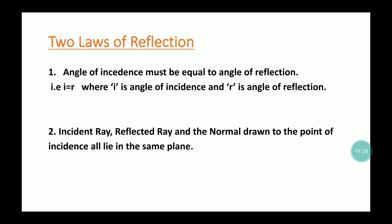There are two important laws of reflection. The first law states that the angle of incidence equals the angle of reflection — angle i equals angle r. The second law of reflection states that the incident ray, the reflected ray, and the normal — which is perpendicular to the surface — all lie in the same plane.